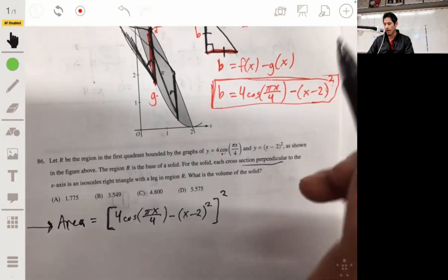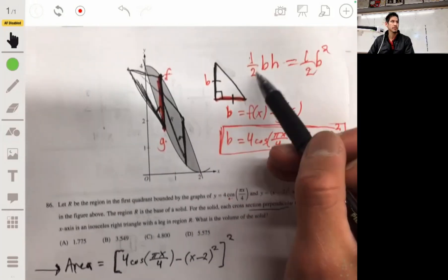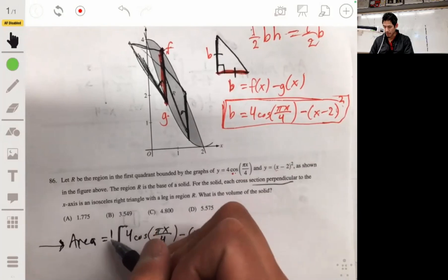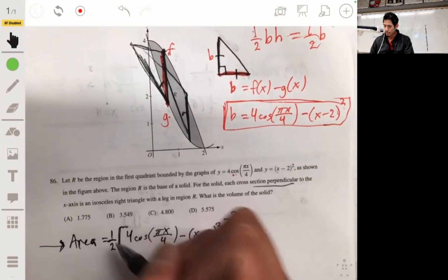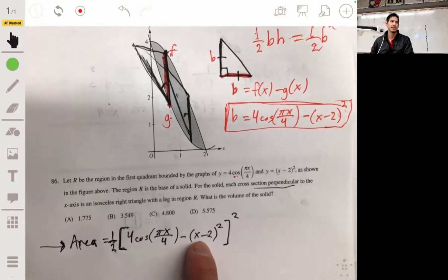Now, sorry, times that one half. Let's multiply this times one half. So that's the area of each of those isosceles triangle cross sections. So again, think of maybe like you have something like this cropping out.